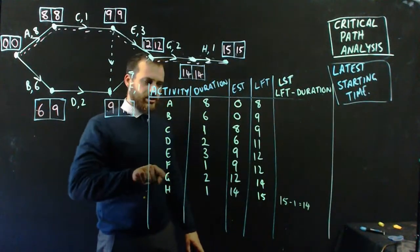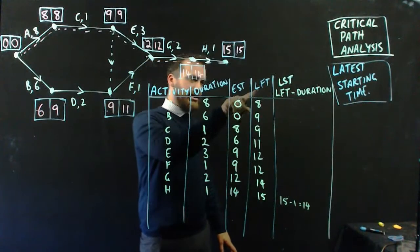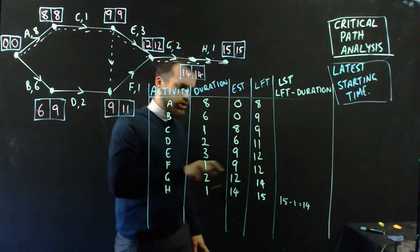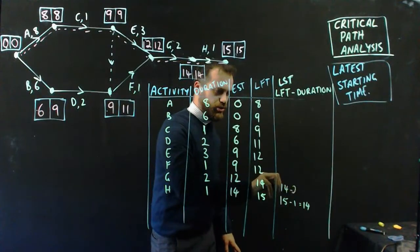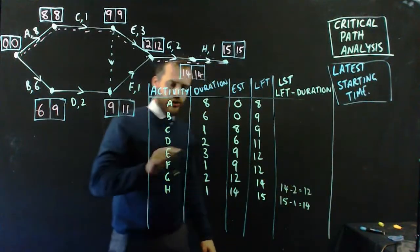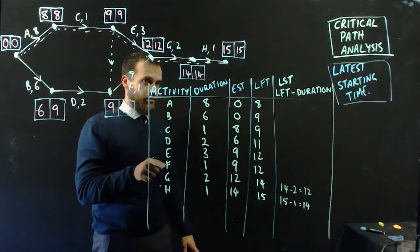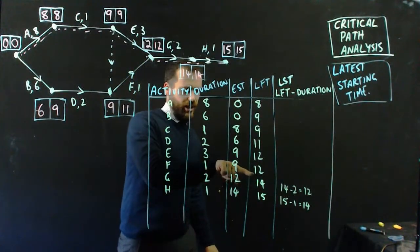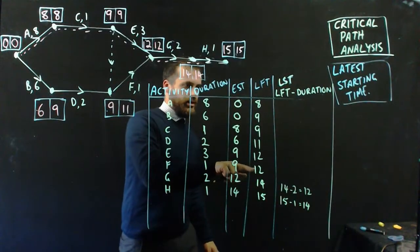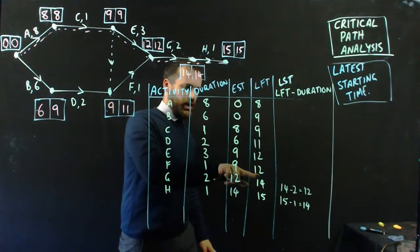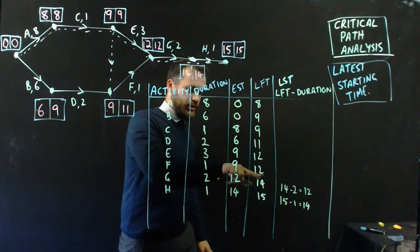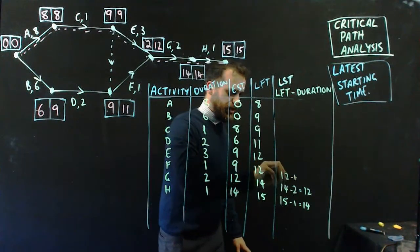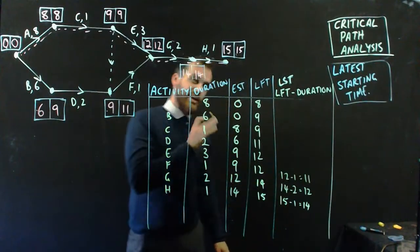The latest that G can start. So G's latest finishing time is 14. It's going to take 2 hours to do the job. So 14 minus 2 equals 12. G had better start at the 12 hour mark, or we're not going to get this done on time. Right, F. What about F? Let's see. The latest finishing time for F is 12 hours. It takes 1 hour to do F, so we'd better start it at 12 minus 1, which is at the 11 hour mark. And you can see that that's our little bit of slack time here, right? We said that could start a little bit later.